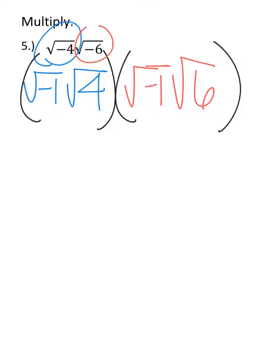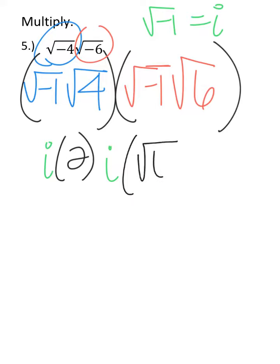Okay, so we know that the square root of negative 1 equals i, so this is going to be i times the square root of 4 is of course 2, and then we have i again from the second square root of negative 1 times the square root of 6.